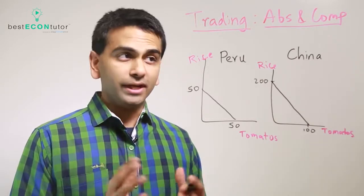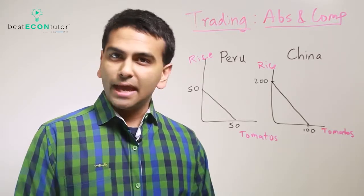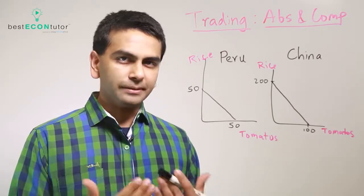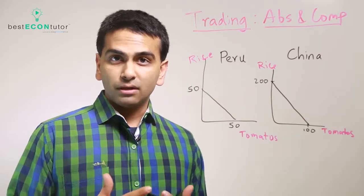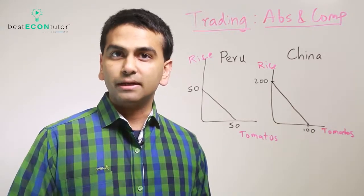What if we have two countries, China and Peru, and they can make two goods, rice or tomatoes, and we're wondering could they benefit by trading with each other? Well, there's two things economists look at: absolute advantage and comparative advantage.